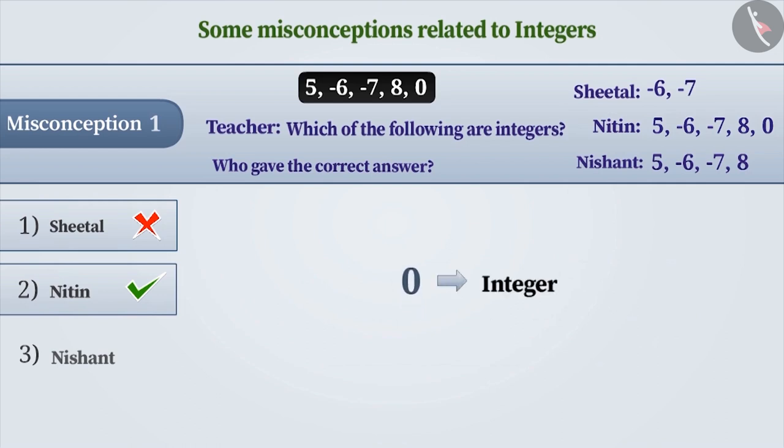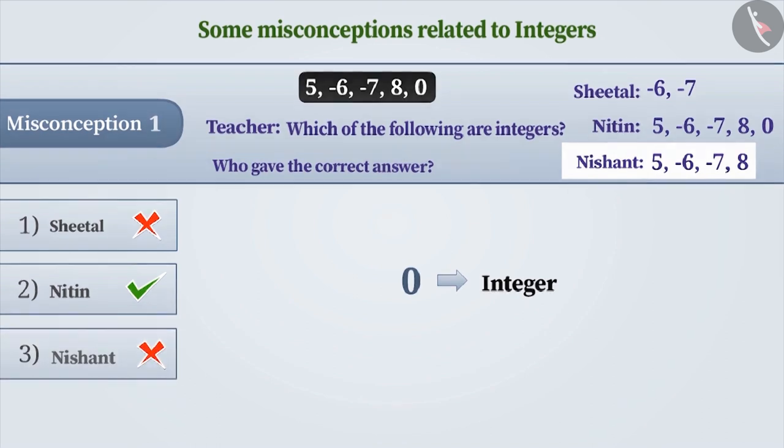Many times, 0 is not considered an integer. Nishant has ignored this here. Yes, it is true that no sign is associated with it. But it is important to understand that 0 is also an integer. That is, Nishant's answer is also wrong. So, option 3 is not the answer.